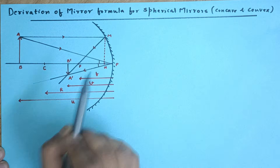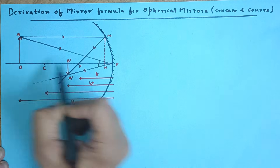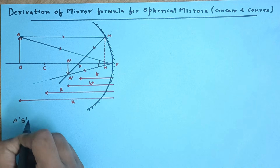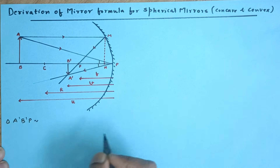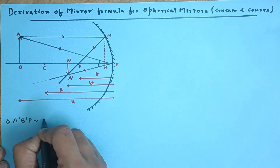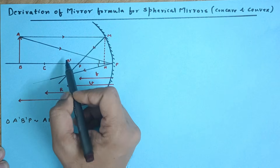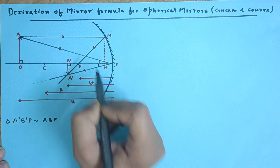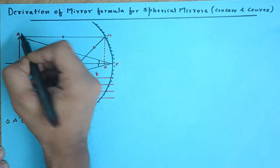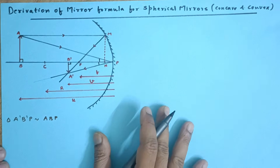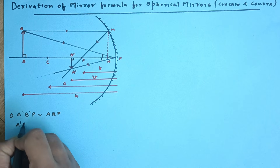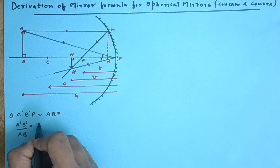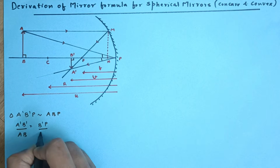Now we are going to take two pairs of triangles. The first pair is ABP and A'B'P. Triangle A'B'P is similar to triangle ABP. Note that we write the two triangles in sequence: angles B and B' are equal, these two angles are equal, and therefore the third angle must equal the third angle of the other triangle. From here, A'B' upon AB is equal to B'P upon BP.